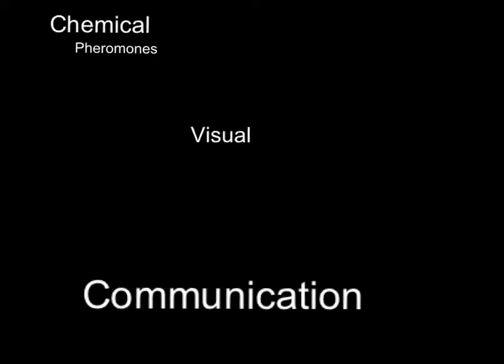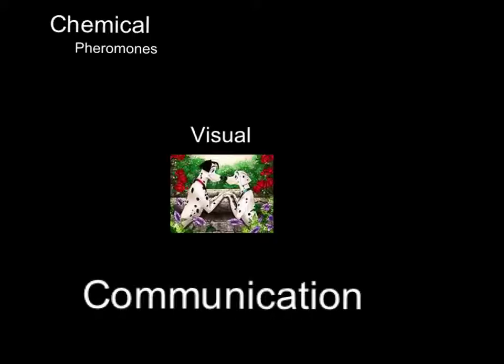Animals can also communicate visually. When a male red stickleback fish wants to mate, it shows its red underbelly, which attracts female mates. Animals can also communicate through tactile ways. For example, honeybees do a dance that indicates food is nearby. They do a waggle dance to indicate the direction of the food.